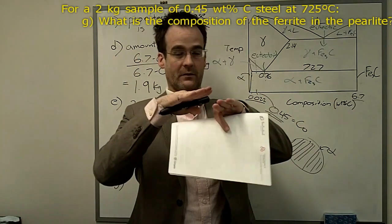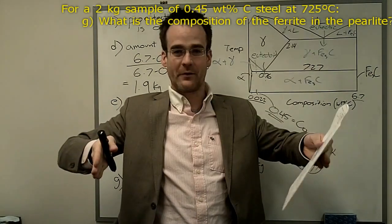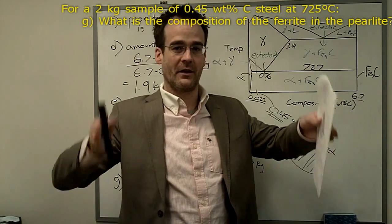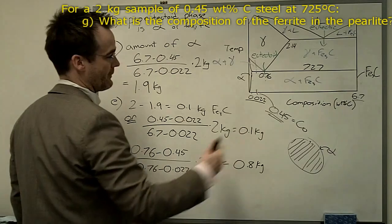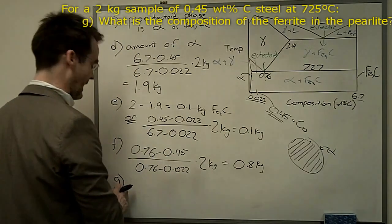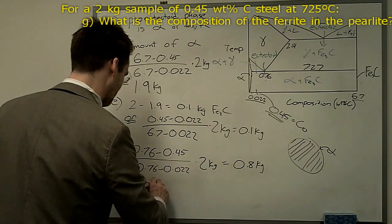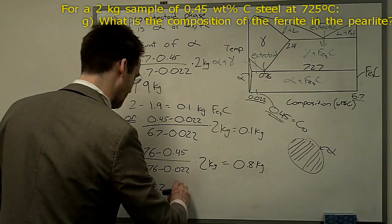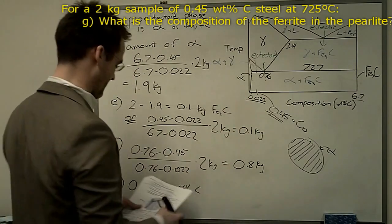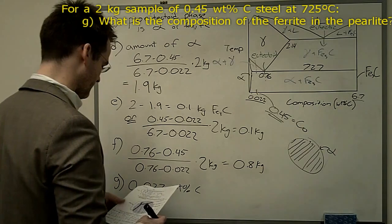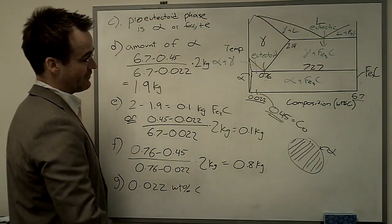Remember, I always do this. You two-phase region, you draw your horizontal line, your tie line, and then you draw your vertical lines down to get the composition. Composition, weight percent of the component on the right. All right, so then the answer to question G, what's the composition of the ferrite, is just 0.022 weight percent carbon. Just pick it straight off the phase diagram.